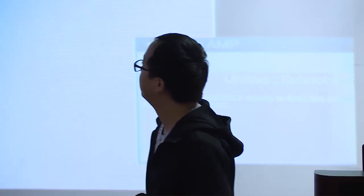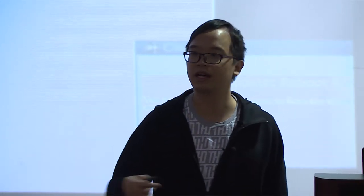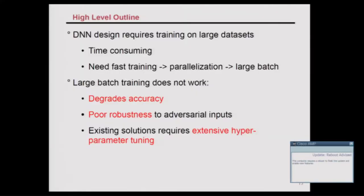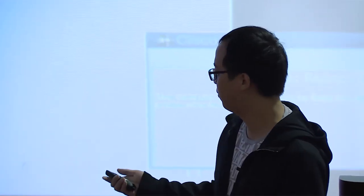Next, I'll talk about efficient deep learning training. Training a neural network takes several days to two weeks, and this is only part of the design cycle — you design a model, train it, evaluate it, and if it's not good, you drop it and start again. This is very time-consuming, so we need fast training. A straightforward method is distributed training, which requires large batch sizes — but large batch training doesn't work, as mentioned earlier.